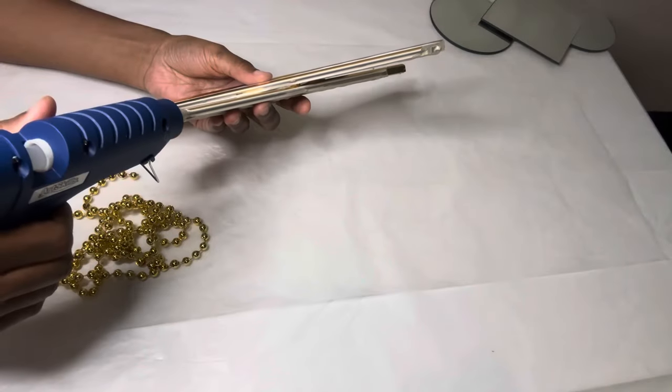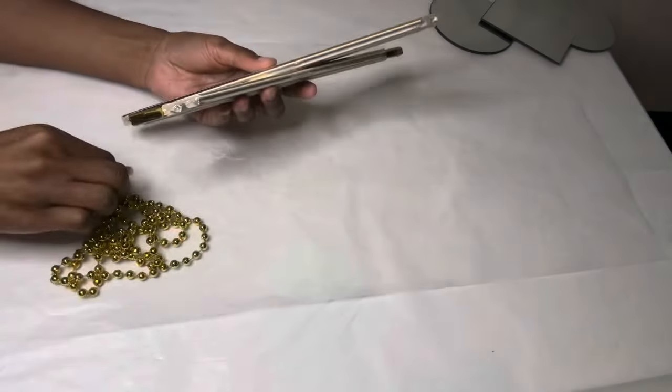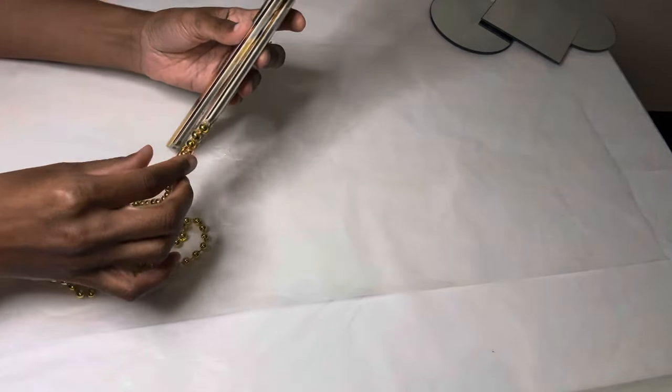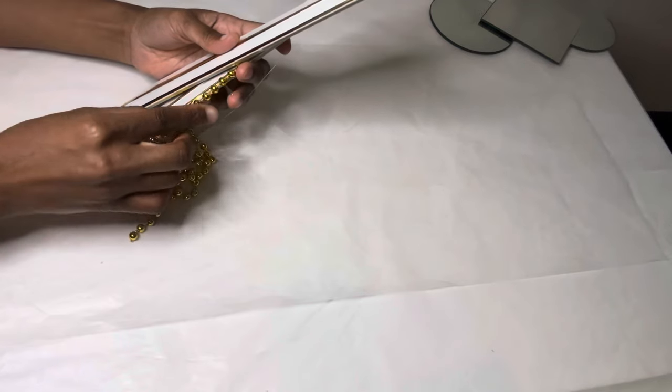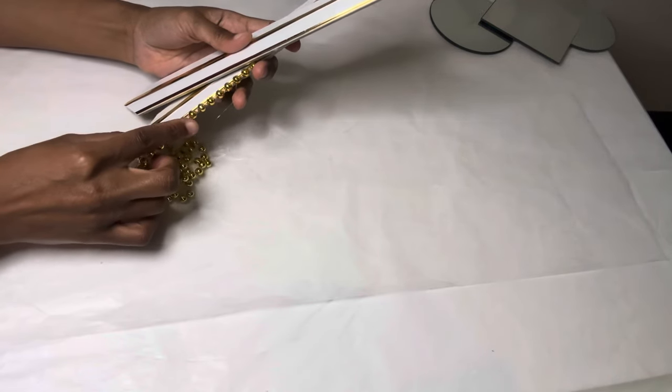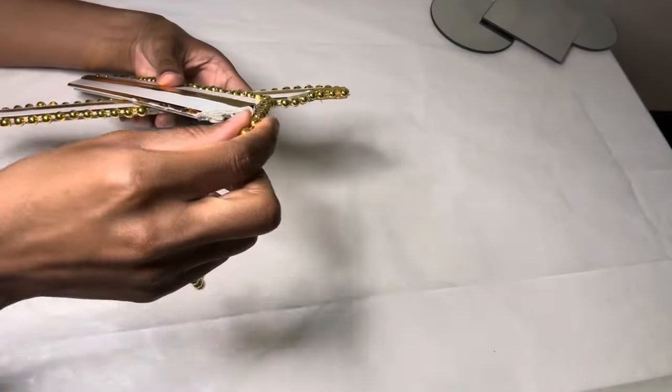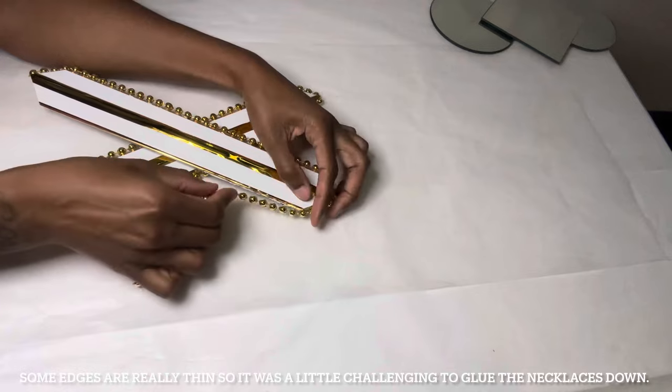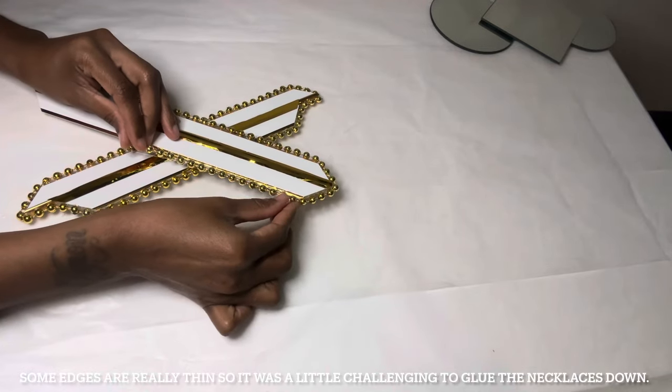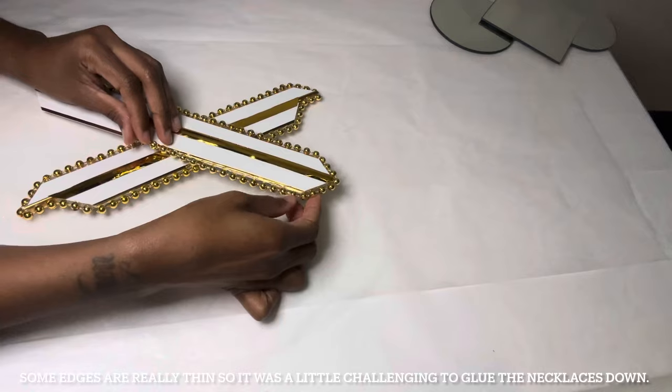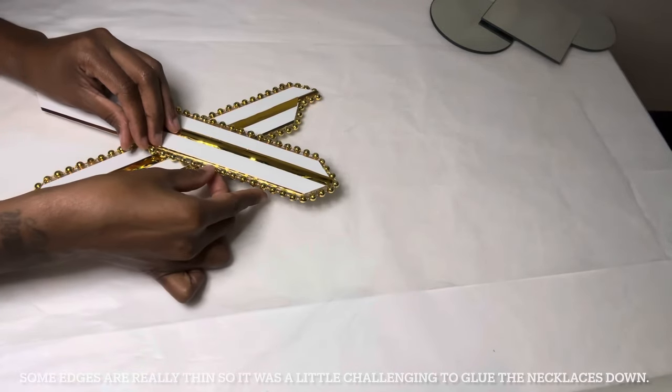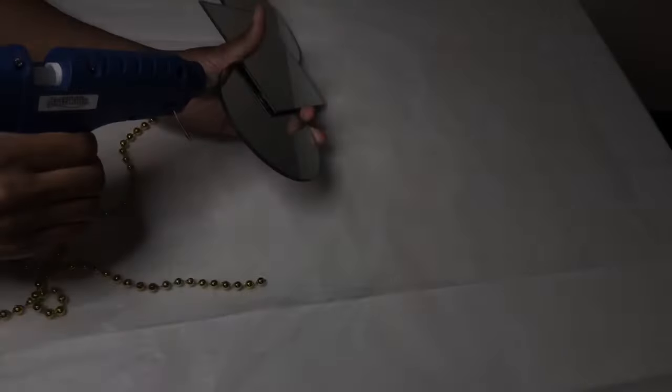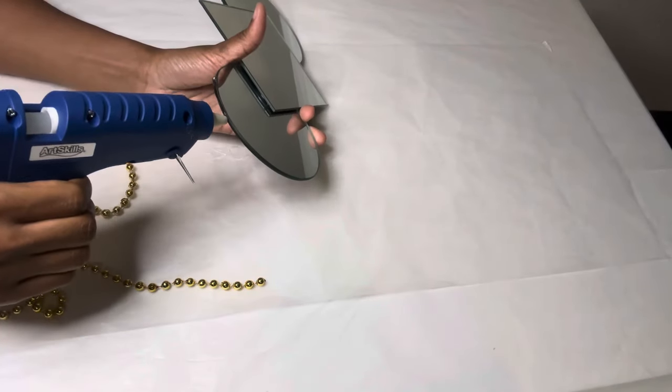I'm gluing this beaded necklace around the entire perimeter of my X shape. I'm gluing the necklaces around my mirrors as well.